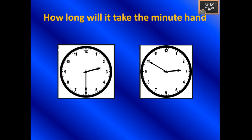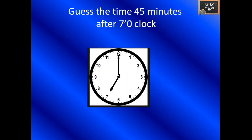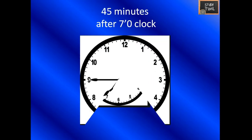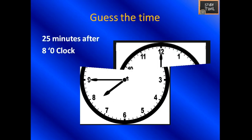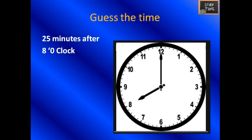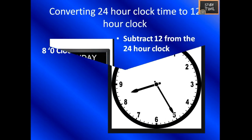How long will it take the minute hand to move from the first clock to the second clock? The first clock shows 2:30 and the second clock shows 2:50. So 2:50 minus 2:30 is 20 minutes. What is 45 minutes after 7 o'clock? It is 7:45. What is 25 minutes after 8 o'clock? It is 8:25.